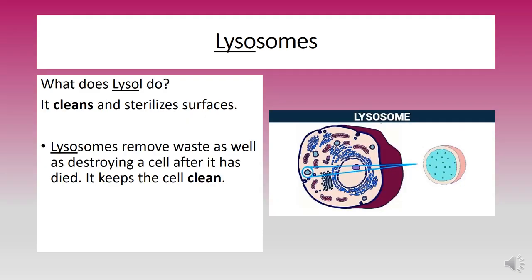Next, we have lysosomes. For this cell part, think of Lysol — that spray product with a unique smell that kills 99.9% of germs. It's definitely a cleaning machine. Lysosomes basically do the same thing: they keep the cell clean and healthy with their digestive enzymes, which break down excess or worn-out cell parts, along with engulfed viruses or bacteria that have made their way inside the cell.